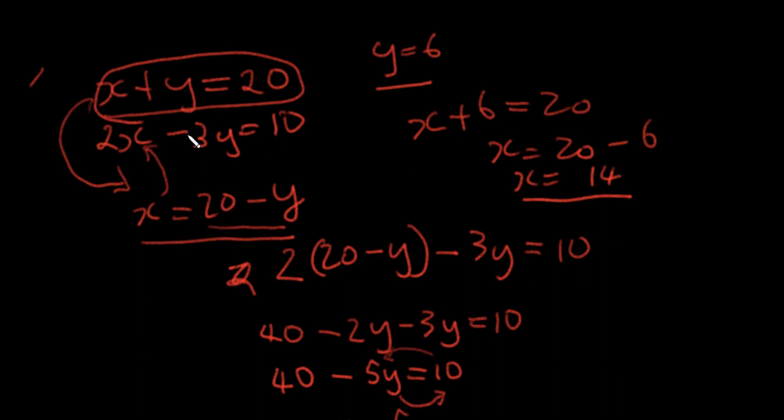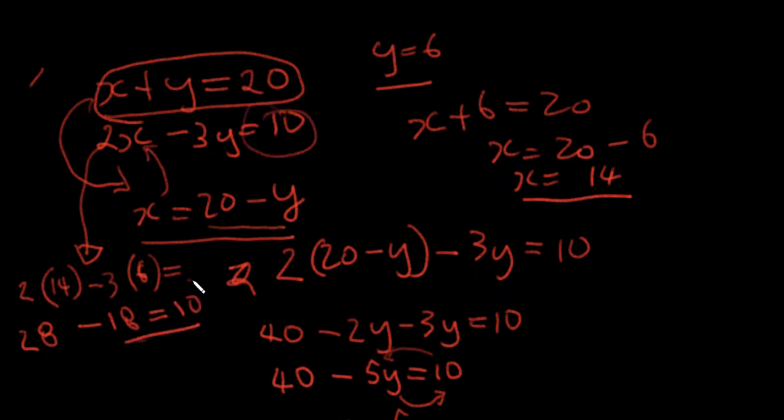And you can go on and cross check here by using this equation. So if I bring it here, just to cross check. So 2 into x, which is 14, minus 3 into y, which is 6, should give me 10. So let's see, 2 into 14 is 28 minus 3 into 6 is 18, which gives me 10. So this and this are the same and it checks out.